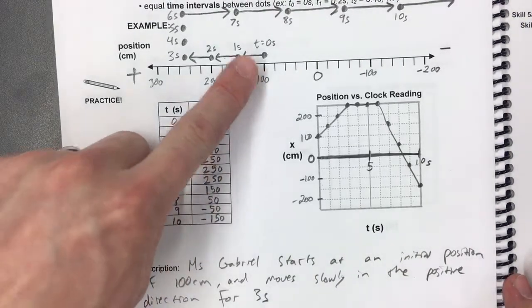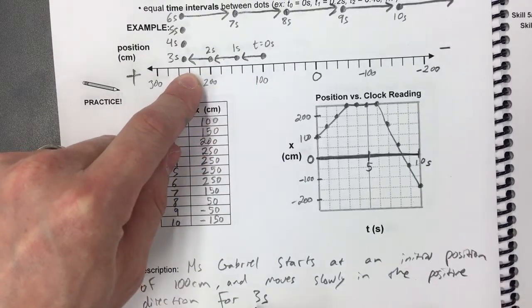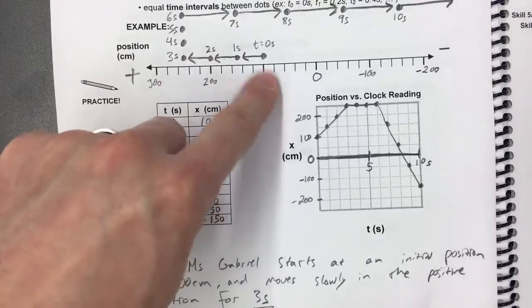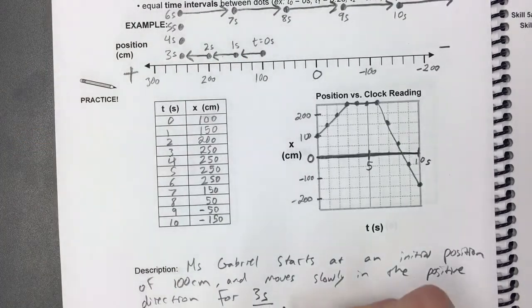and moves slowly in the positive direction for three seconds. Notice there are three dots with that arrow. So me saying three seconds corresponds to these three dots when she's actually moving slowly in the positive direction.